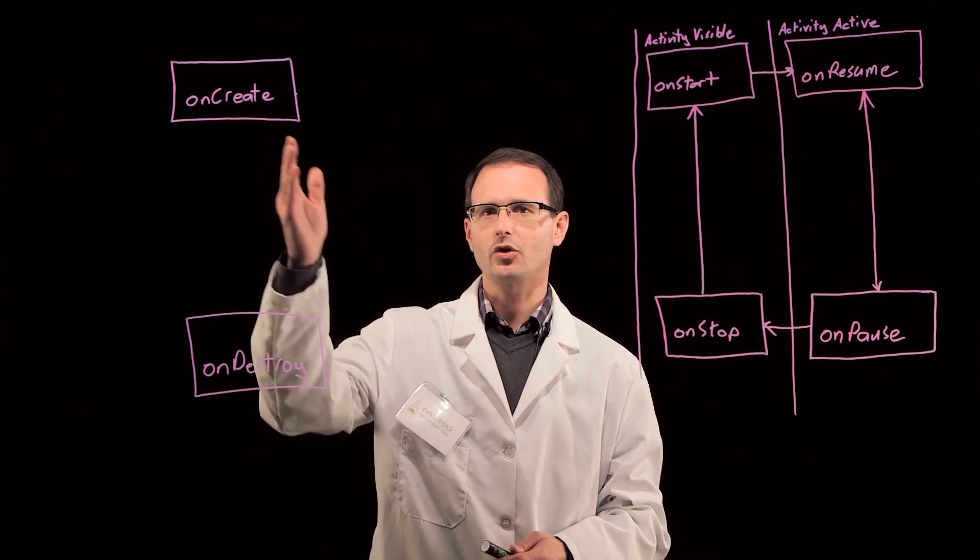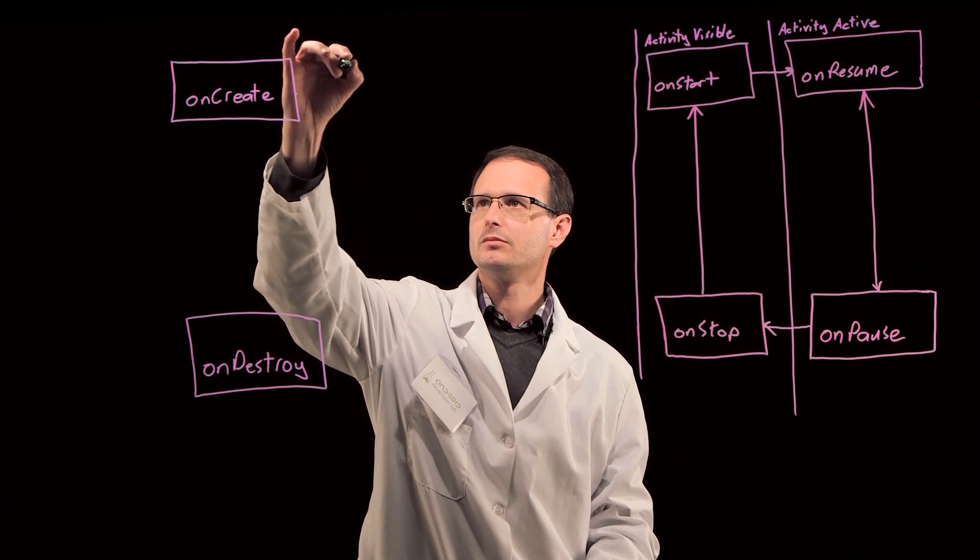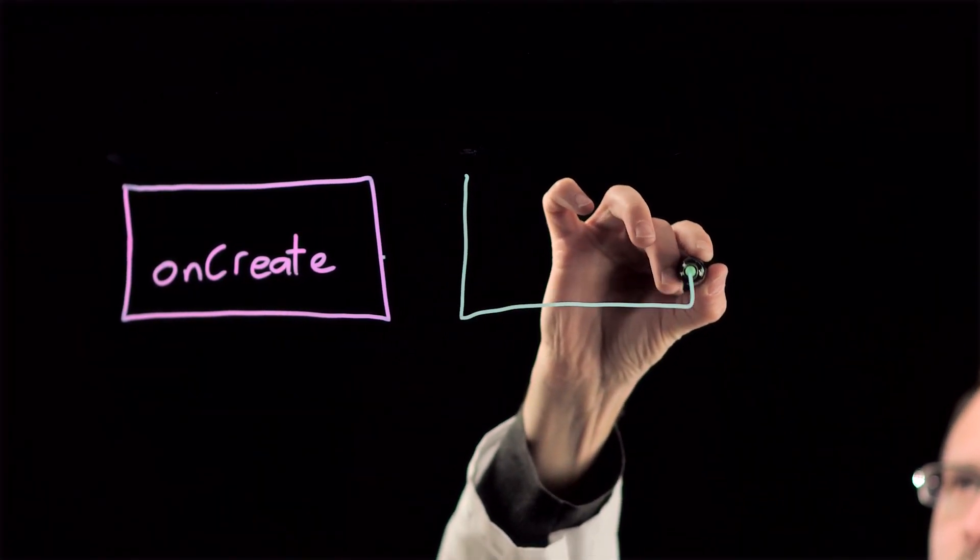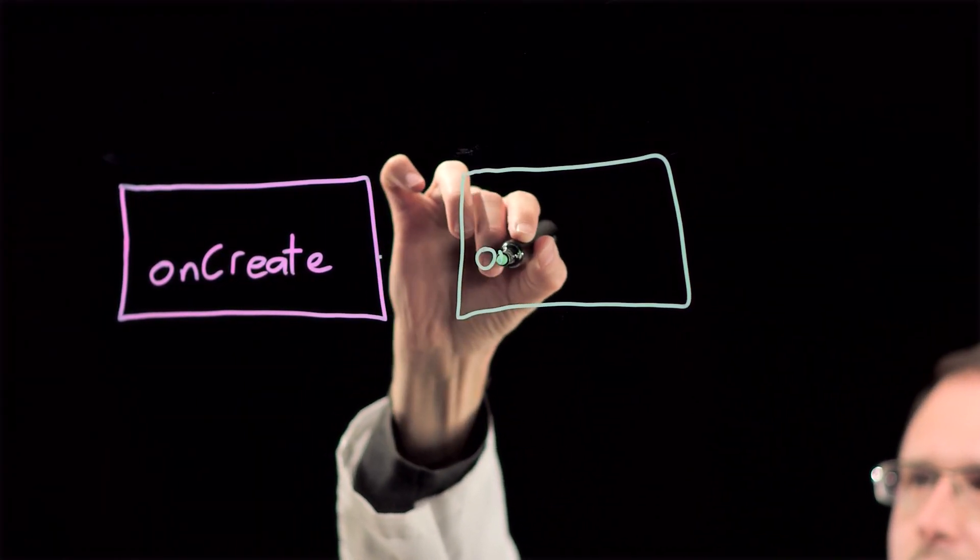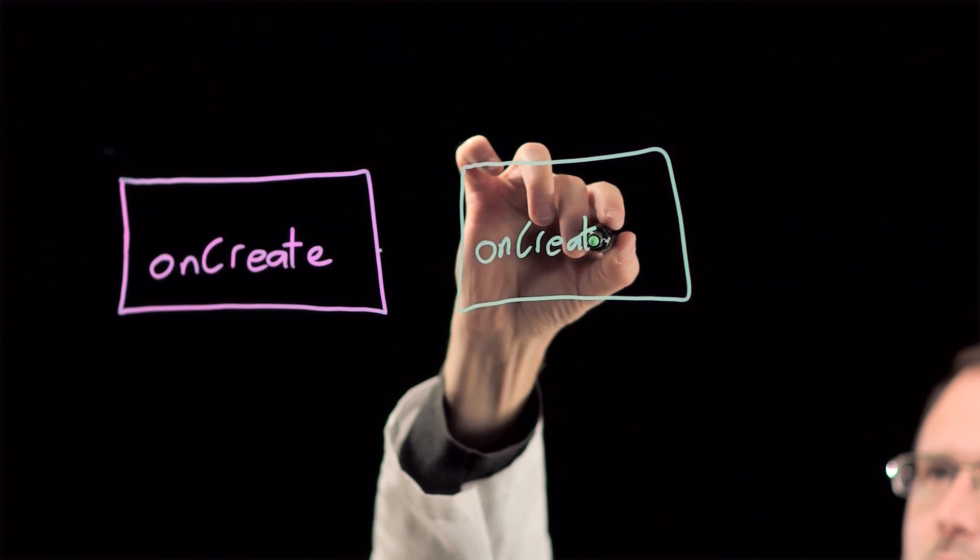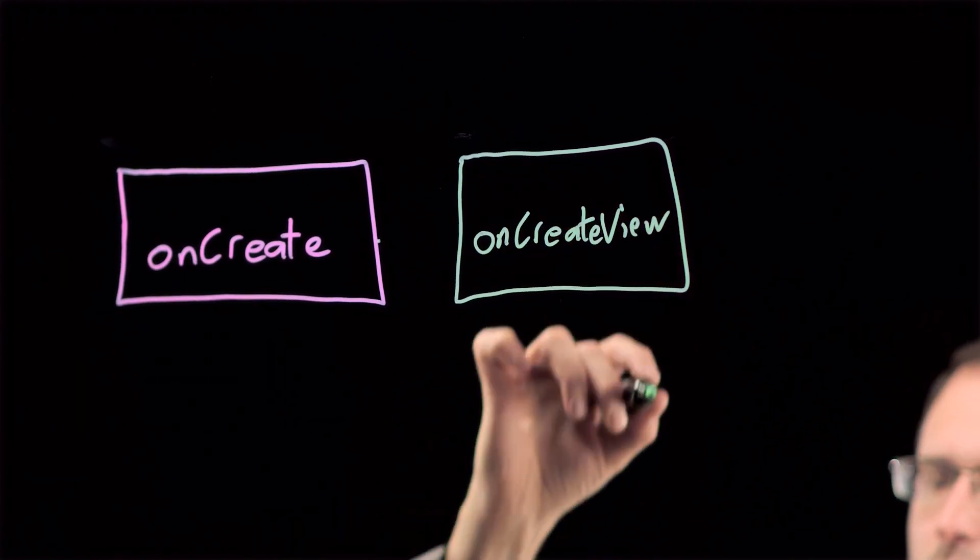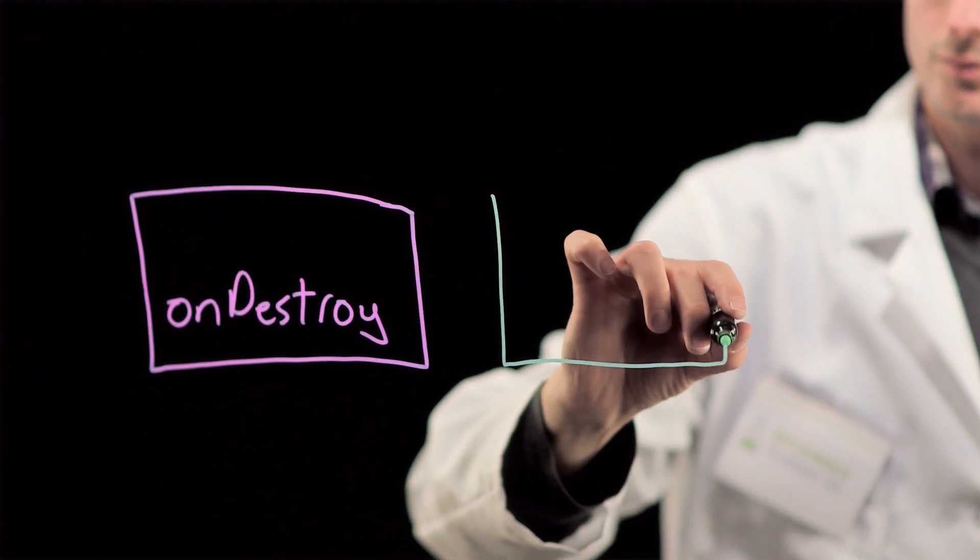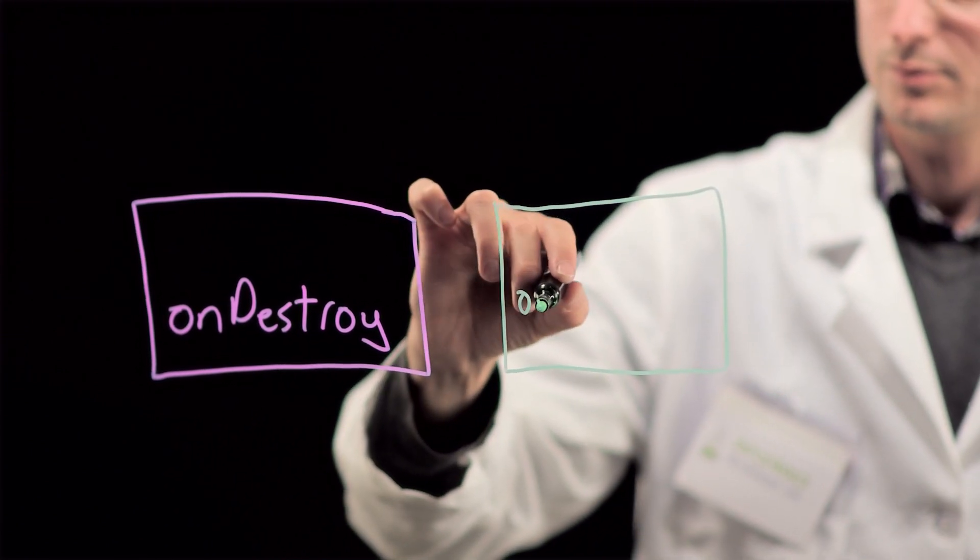Rather than building your UI here in onCreate, fragments introduced a new event specifically for this. onCreateView is where you construct or inflate your UI, hook it up to any data sources, and return it to the parent activity, which can then integrate it into its view hierarchy.